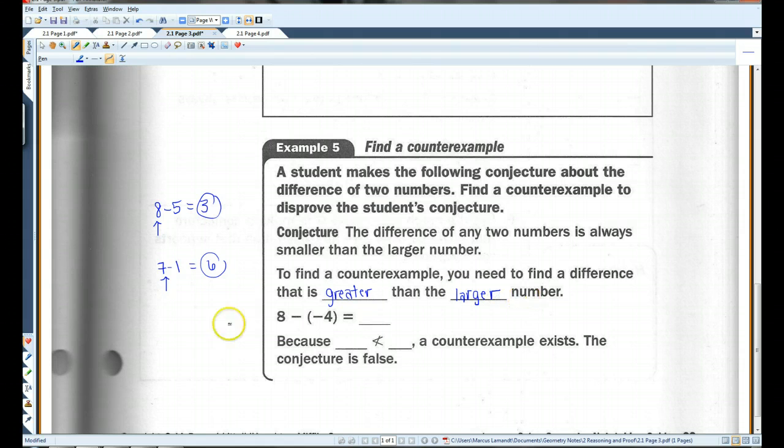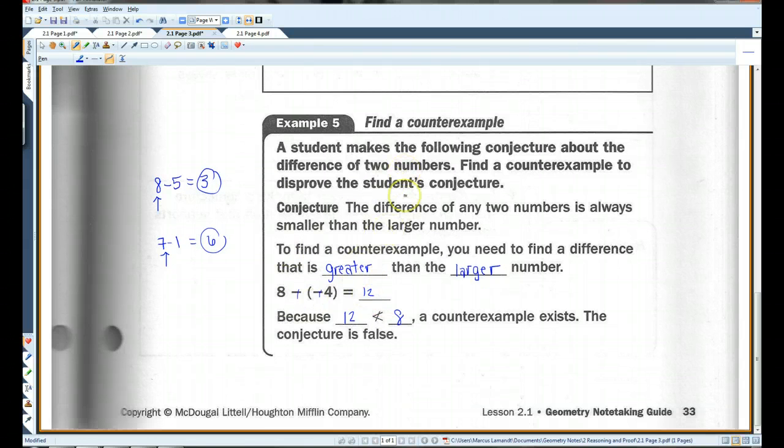For example, let's use a negative number. Eight minus negative four. Remember, a minus negative becomes positive. Eight plus four is 12. Because 12 is not less than eight, a counterexample exists, and the conjecture is false. So, this conjecture, it may work for some cases, but it doesn't work for every case. We've already found at least one case for which this does not work.